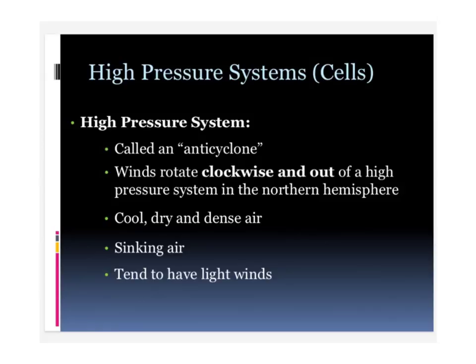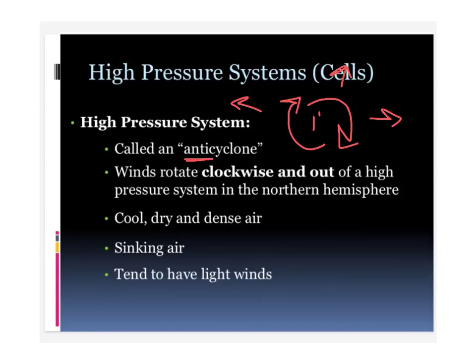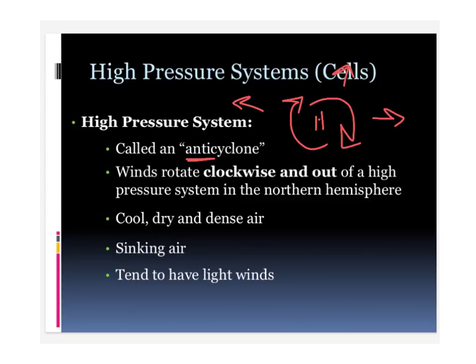For pressure systems — we also call them pressure cells — there are two different types: a high pressure cell and a low pressure cell. A high pressure system is called an anticyclone. The term 'anti' means 'not,' so it is not a cyclone. The reason for that is because the winds are rotating clockwise — the way a clock moves — and they're going outward from the center, because the center is a high pressure center. So it goes from high to low, clockwise and out. This is all in the northern hemisphere; it would be reversed in the southern hemisphere. High pressure systems move clockwise and out from the central point.